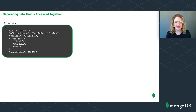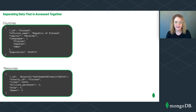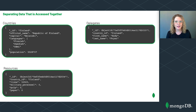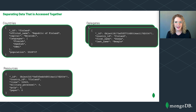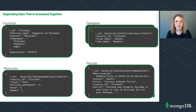Let's begin with the document for Finland in the countries collection. Here we can see Finland's official name, capital city, official languages, and population. In the resources collection, we can see that Andy has acquired 32,563 lions and has no other resources left. In the delegates collection, each delegate has a document. Here's the document showing Andy is a delegate for Finland, and here's the document showing Donna is also a delegate for Finland.